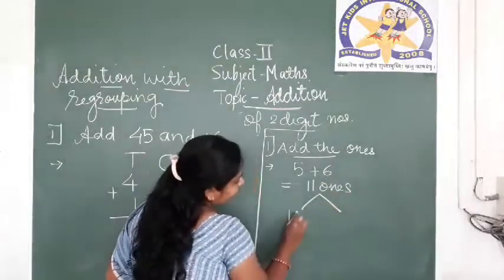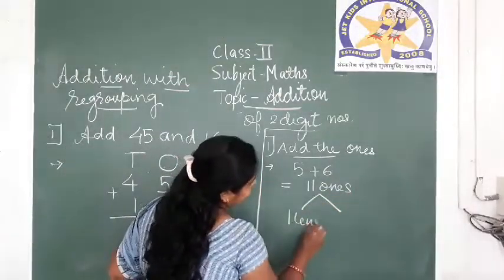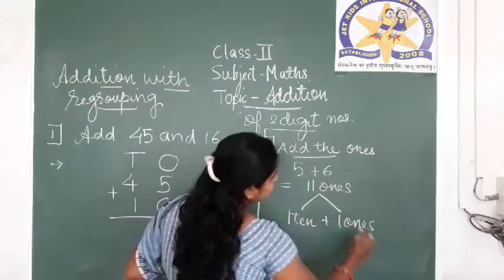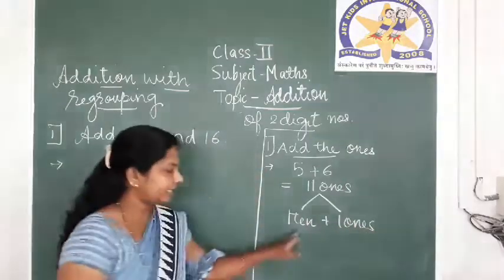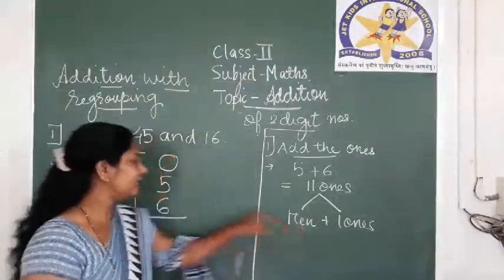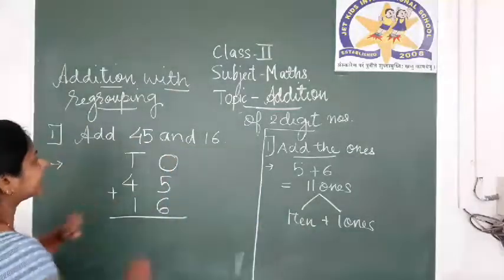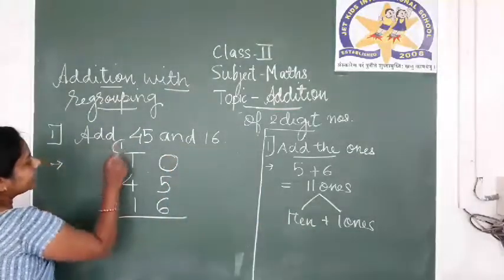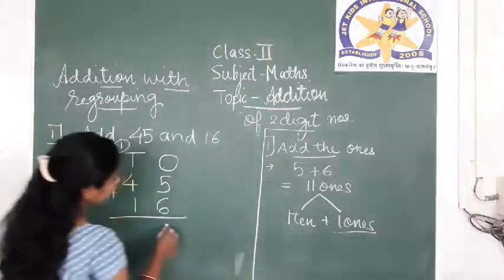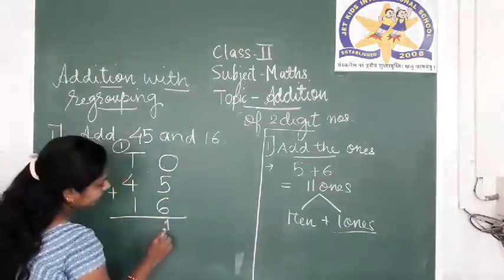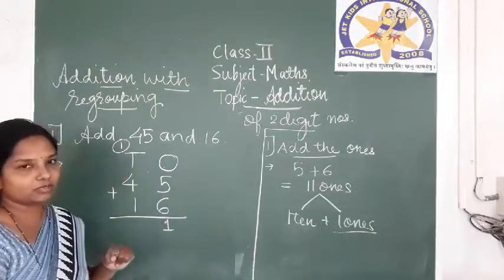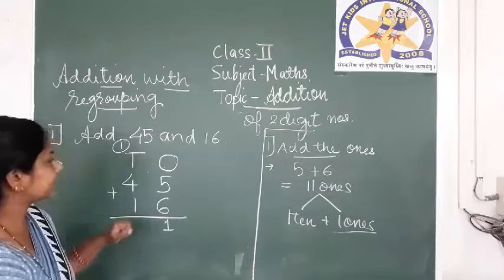That is, 11 ones becomes 1 ten plus 1 one. This 1 ten, we are going to carry over to the tens column, and this 1 one, we are going to write it down in the ones column.